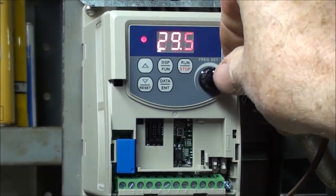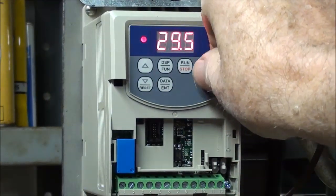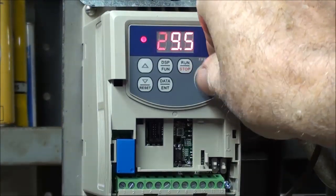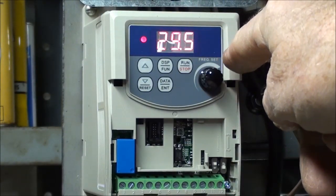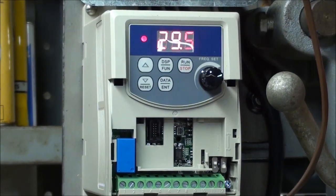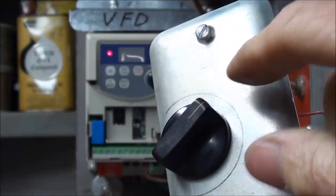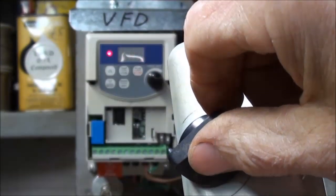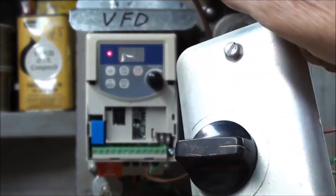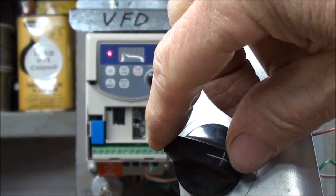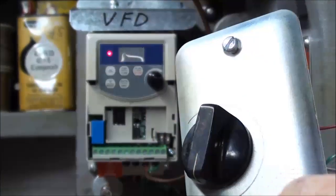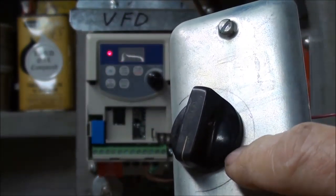Now notice that this one is no longer activated. It's dead as a doornail. And now, the external potentiometer here is activated. Watch the VFD there. And you can see how I can change it from this remote one.